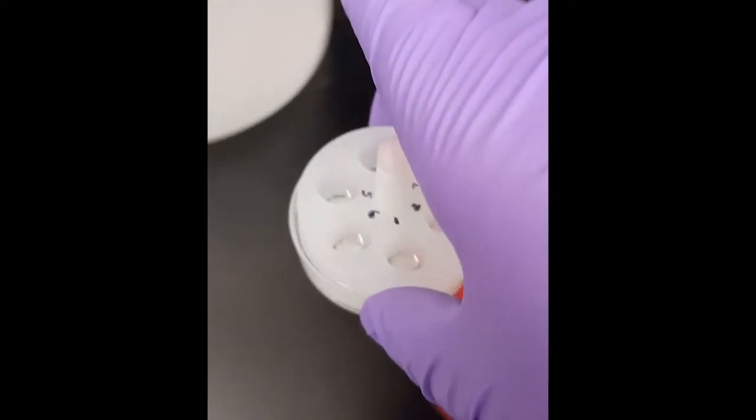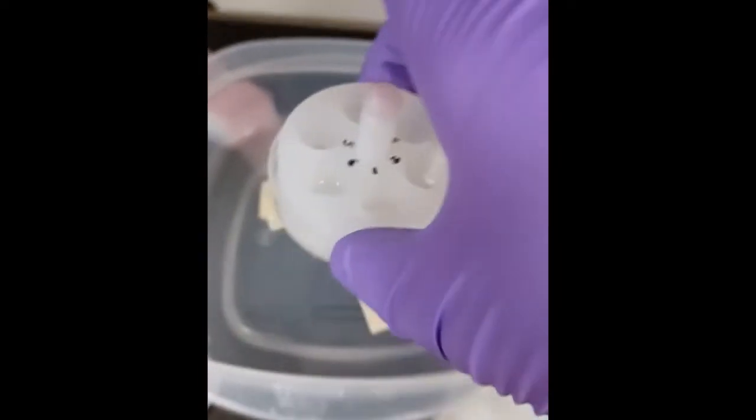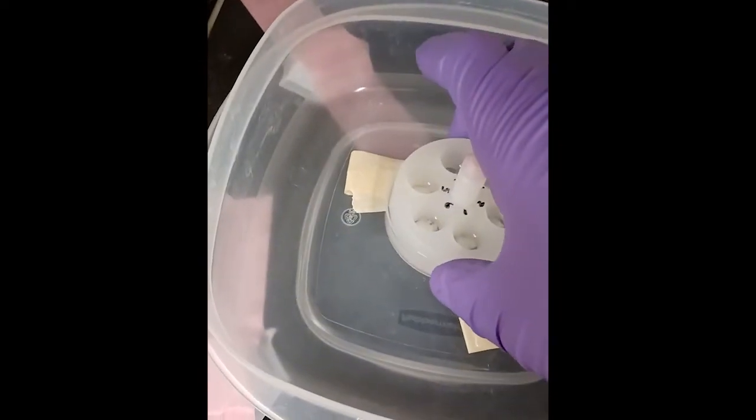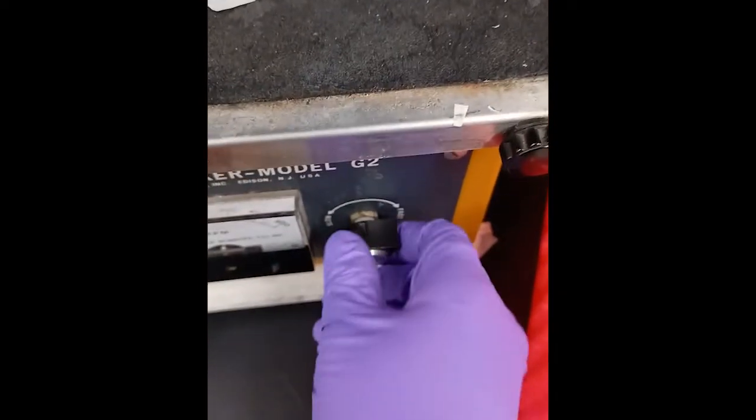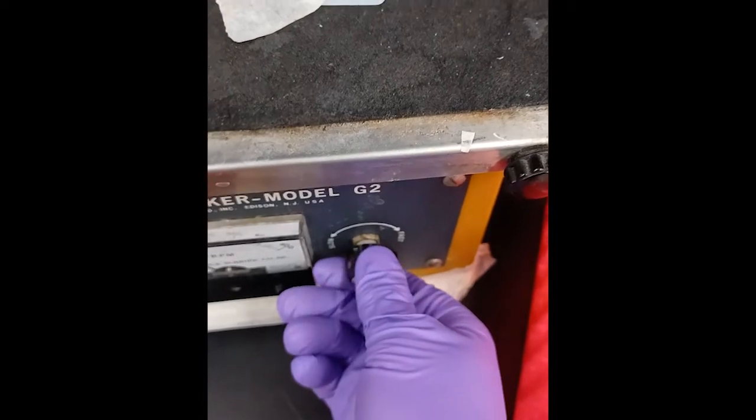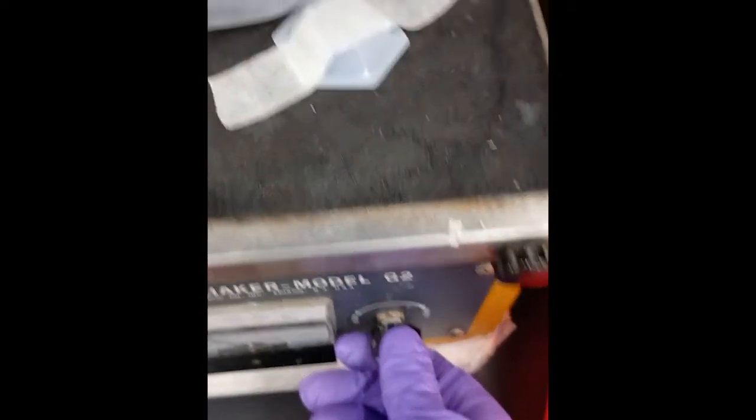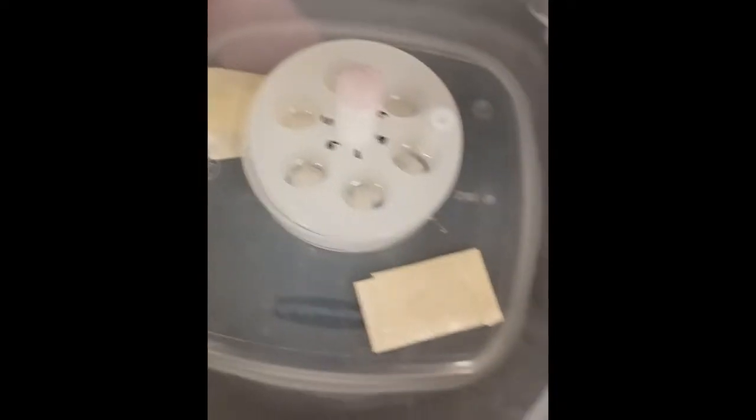Once all three netwells have PBS solution and the inserts put back in, move them back to the Tupperware container that is on top of the shaker as shown here. Set the shaker speed dial to just fast enough so that you can see the sections moving slightly. It is best if the sections move slowly.